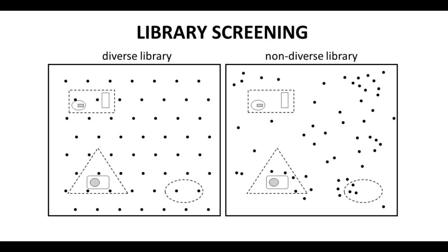In a screening program, ideally the compound library will be as diverse as possible. On the left we have a more diverse library. The members of the library, the black dots, are spread out more uniformly than in the more clustered non-diverse library on the right. These are identical drug-like spaces, and we have three hit regions. Our goal is to find all these hit regions with our library.